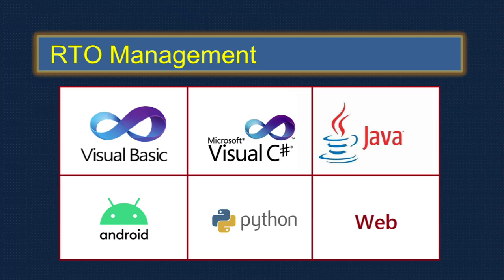RTO is a regional transport office where you can get LL, then DL, then vehicle registration, vehicle transfer, and vehicle renewal - all these activities take place there.